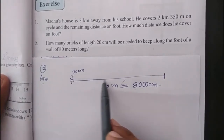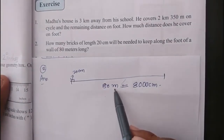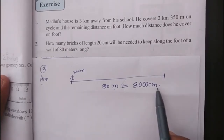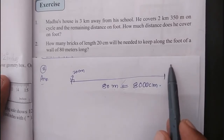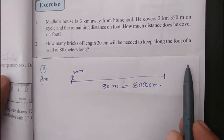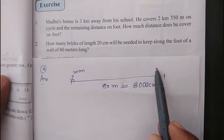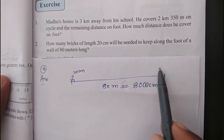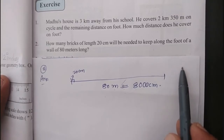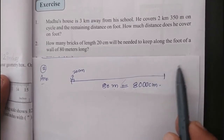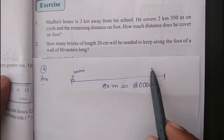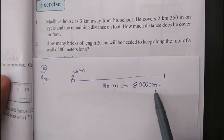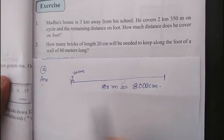Total length of the wall is 80 meters. 80 meters equals 8000 centimeters. 1 meter equals 100 centimeters. 2 meters equals 200 centimeters, 3 meters equals 300 centimeters, 10 meters equals 1000 centimeters. So 80 meters equals 8000 centimeters.